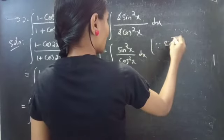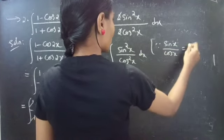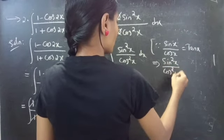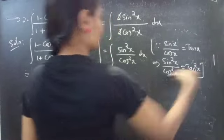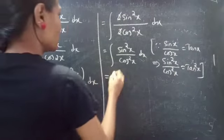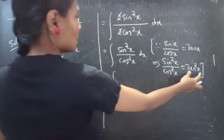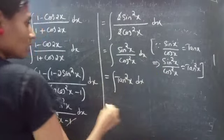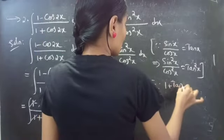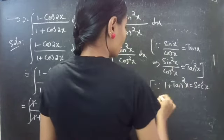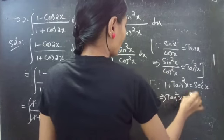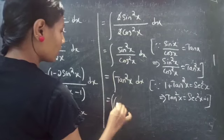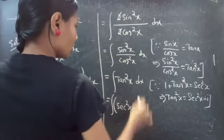Since sin x / cos x = tan x, squaring both sides gives sin²x / cos²x = tan²x. So we replace sin²x / cos²x by tan²x. Since 1 + tan²x = sec²x, we get tan²x = sec²x - 1. So we replace tan²x by sec²x - 1, giving the integral of (sec²x - 1) dx.